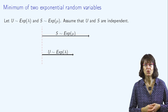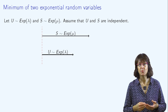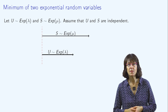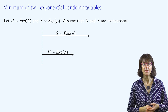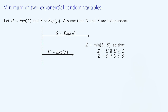Another important property of the exponential distribution is the law of the minimum of two exponential random variables. Let's assume that U and S are two independent random variables, such that U is an exponential with parameter lambda and S is an exponential with parameter mu. Let's consider Z defined as the minimum of U and S. In particular, in a queuing system context, if U is the time until the next arrival and S is the time until the next departure — an end of service time — then Z is the time until the next event in this system, whether it's a departure or an arrival. One remarkable property is that Z is distributed according to an exponential law with parameter equal to the sum of lambda and mu.